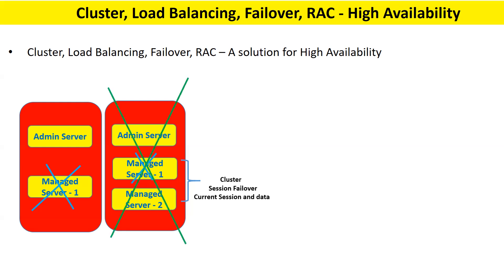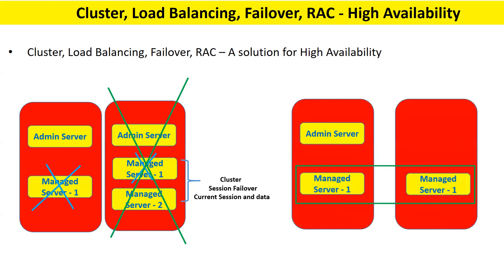If your machine gets crashed, it doesn't matter how many managed servers are running on that host — all applications will be down because everything is down. For that, you need two parallel machines, where we do a proper cluster with one managed server on machine 1 and another managed server on machine 2. If any machine crashes, your application will be available from the managed server running on the other host. This is the basic concept of clustering, session failover, and the concept of failover.